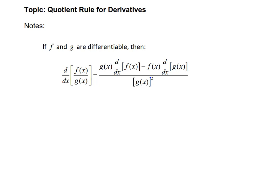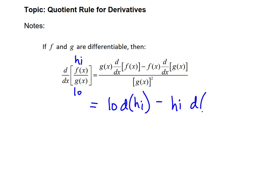The notation can get a little easy to trip over, so there's a convenient shorthand. If you think of the original function f of x as the 'high' function and g of x as the 'low' function, then this formula is really: low d high minus high d low, all over low squared. It's not formal, but it's an easy way to remember it and it really simplifies the formula in a helpful way.